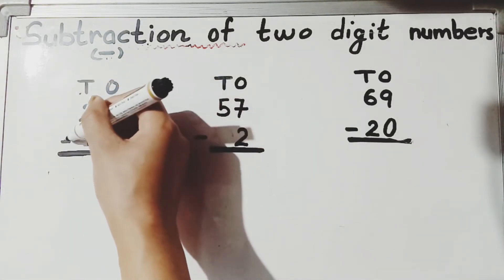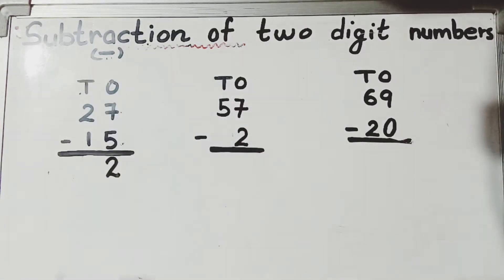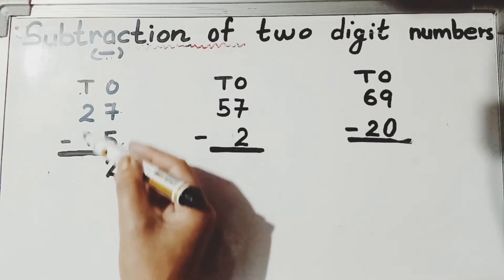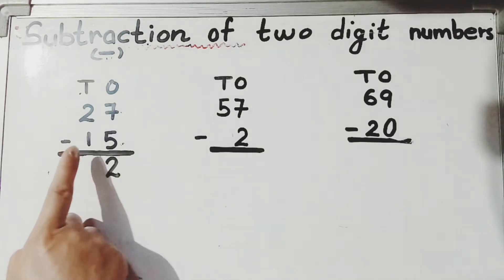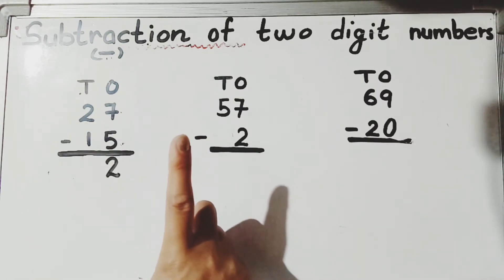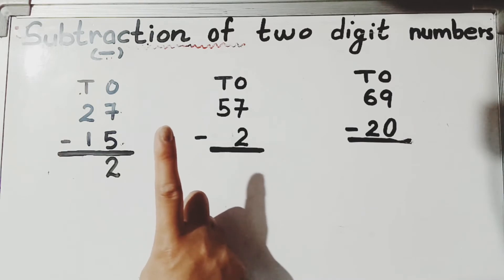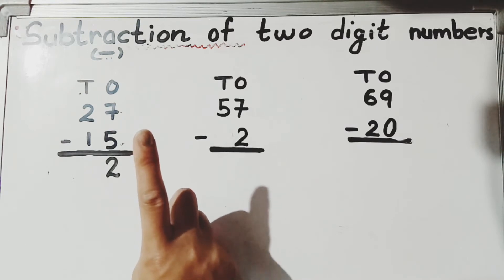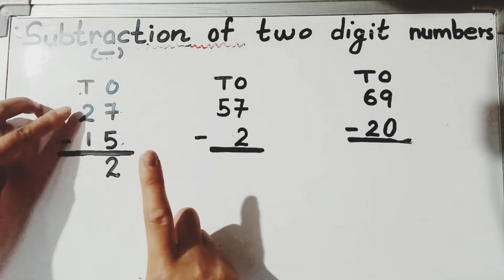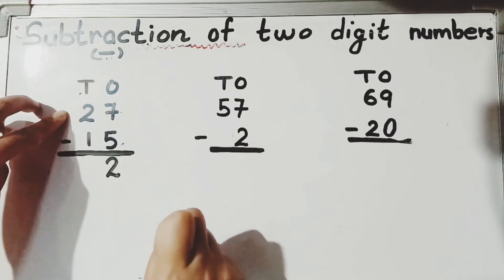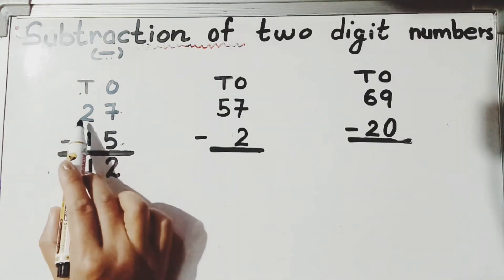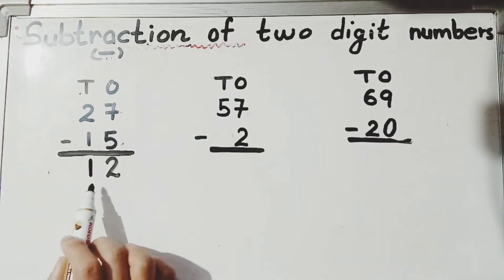Now we subtract the tens. In the tens column we have two minus one. Two is bigger and one is smaller, so keep two in your mind and open one finger. Count backward: what comes before two? One. So two minus one is one. Therefore, 27 minus 15 equals 12.